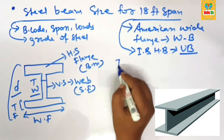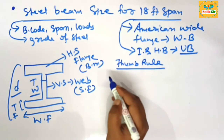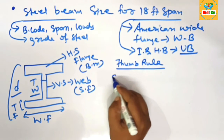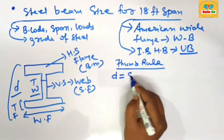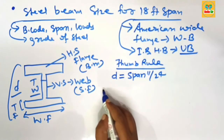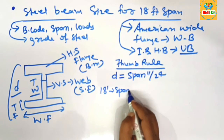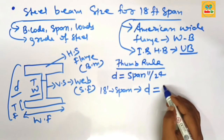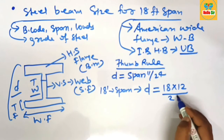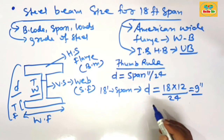Now we calculate the steel beam size for an 18-foot span using the thumb rule. For sizing a steel beam, you need to find the depth section and width section of the beam. The depth of the beam should be your span in inches divided by 24. For an 18-foot span, multiply 18 by 12 and divide by 24, which gives approximately 9 inches depth.